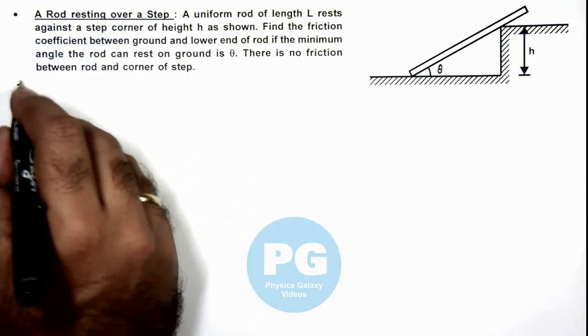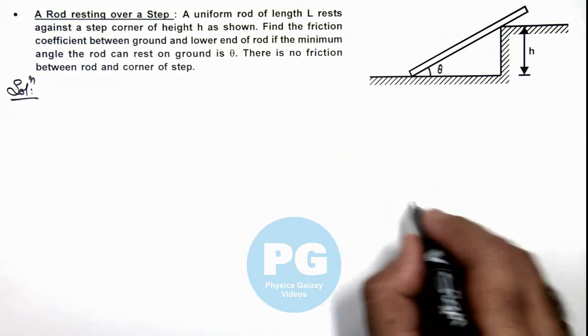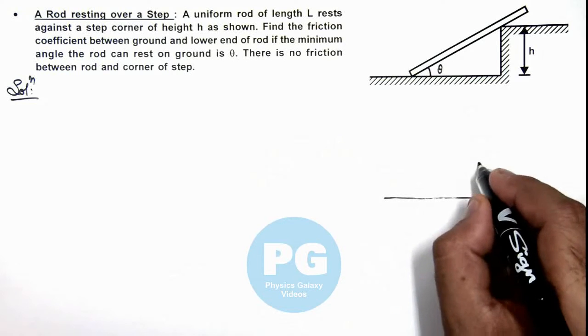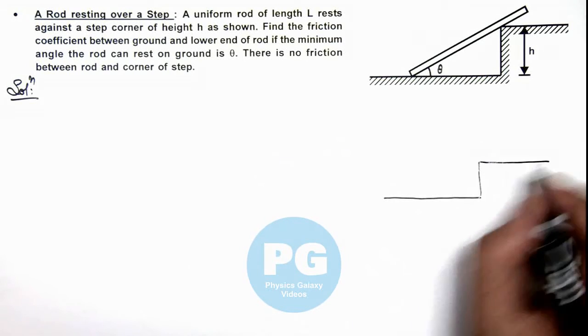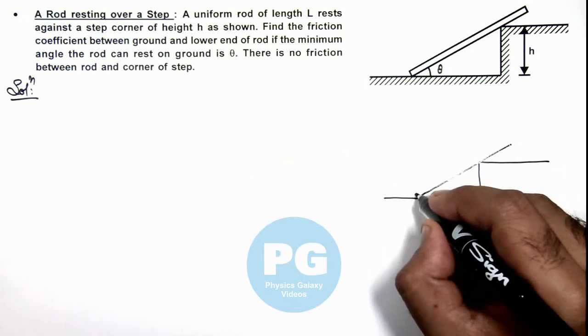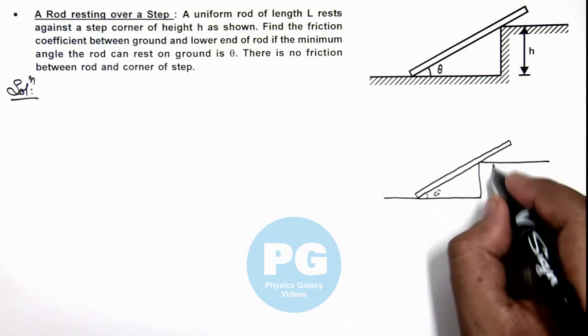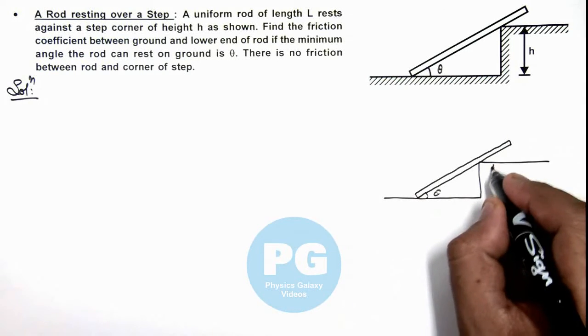Now in this situation, if we analyze the free body diagram and equilibrium of rod, we can redraw the situation. On this step a rod is placed. Here if this angle is theta and this height given to us is h.